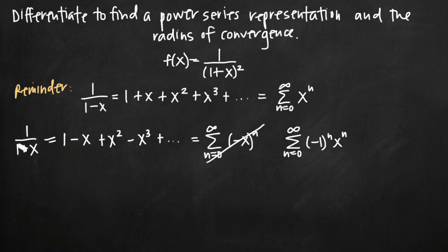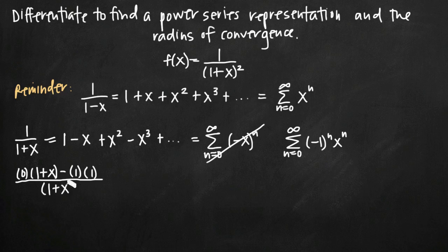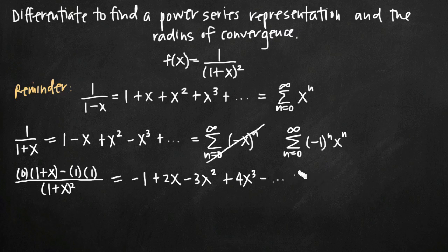Taking the derivative using the quotient rule: the derivative of the numerator 1 is 0, so 0 times the denominator 1 plus x, minus the numerator 1 times the derivative of the denominator. The derivative of 1 plus x is just 1, so we have 0 minus 1 times 1, all divided by the quantity 1 plus x squared. We also differentiate each term in the series: the derivative of 1 is 0; derivative of negative x is negative 1; derivative of x squared is plus 2x; then minus 3x squared; then plus 4x cubed, and so on.